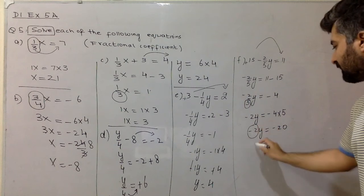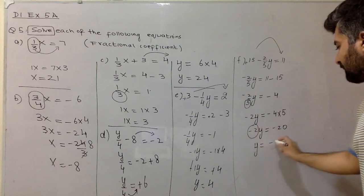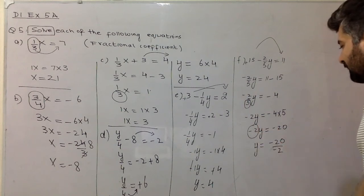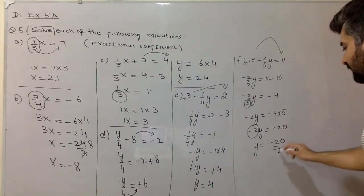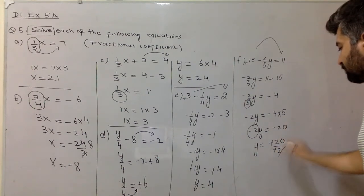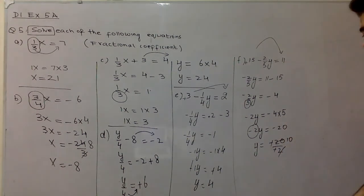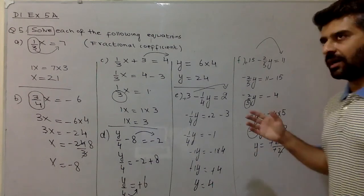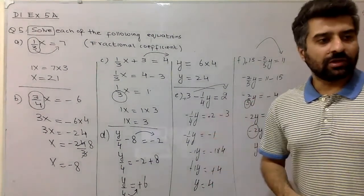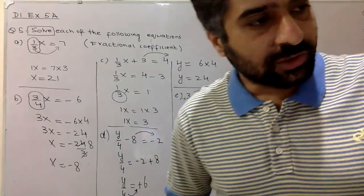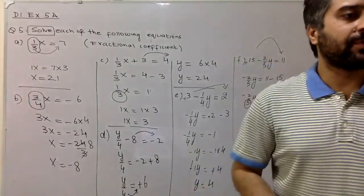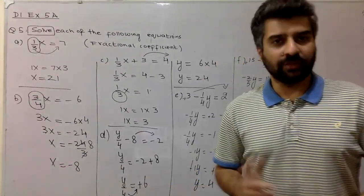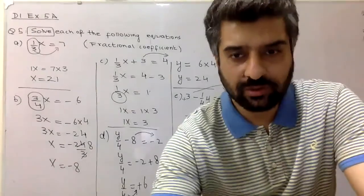Now shift the 2 to the right side — it divides minus 20 by minus 2, giving y equal to 10. This is the solution for this equation. So this is the solution of question number 5 from D1, 7th edition. I hope you have understood.